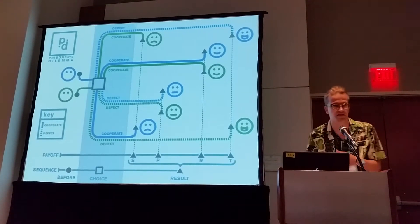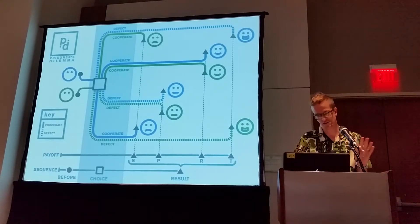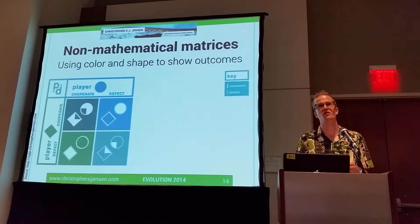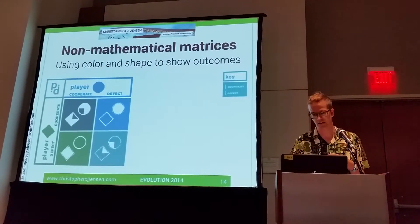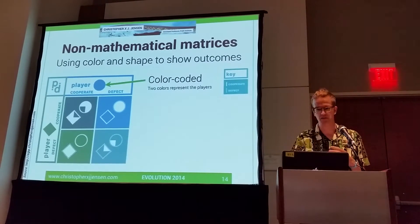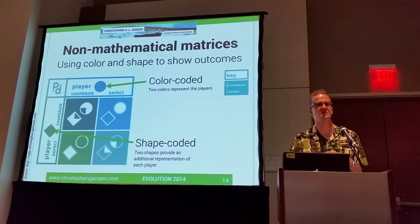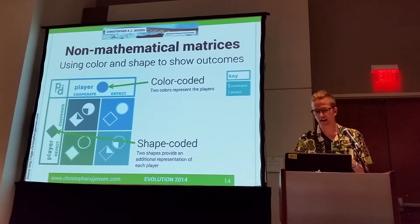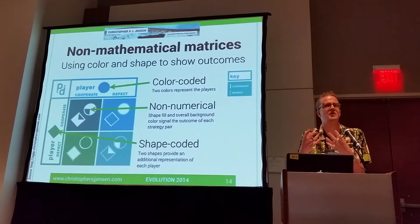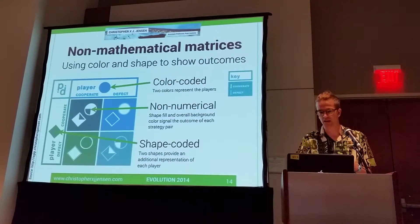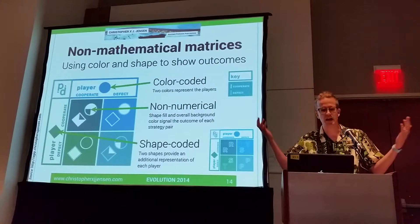We do use the terms sucker, punishment, reward, and temptation, but we show them graphically using space as a proxy. You can talk to students about how those lines can move but always need to be relative to each other. We also decided to give up numbers — we didn't abandon the matrix forms, but we stripped them of their numbers. These forms are available for other games like Stag Hunt and Hawk-Dove. They're color-coded so you can tell which player is which, and also shape-coded. Every piece of information has two visual signals, and we use non-numerical fill to represent the payoff.